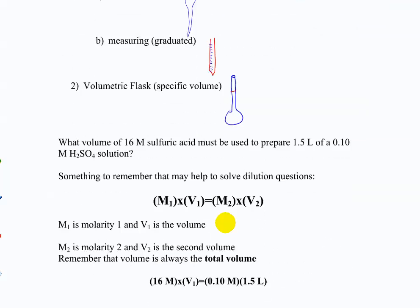Now let's look at the shortcut equation everyone remembers: M1V1 = M2V2, sometimes written as C1V1 = C2V2. M stands for molarity, C for concentration — this is more general than just molarity. If you have a certain concentration and volume and want a new volume, solve for the second concentration. If you want a new concentration, solve for the second volume. This is effectively what we just did with those steps.